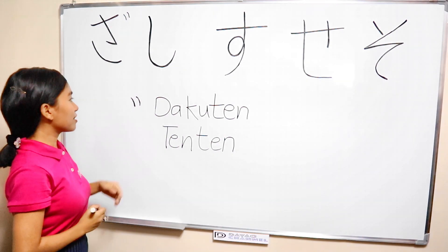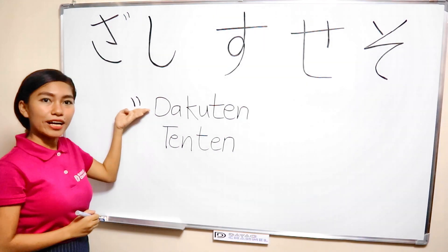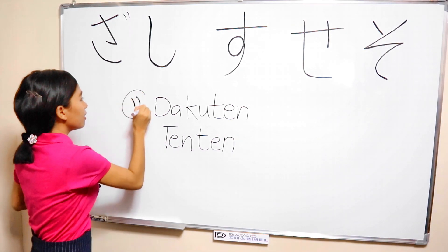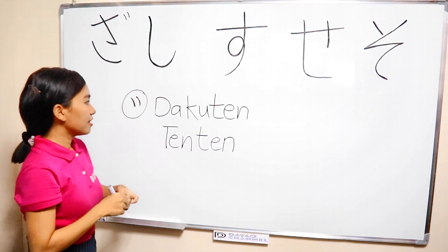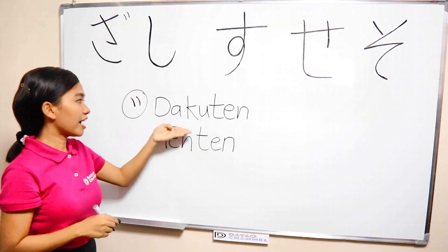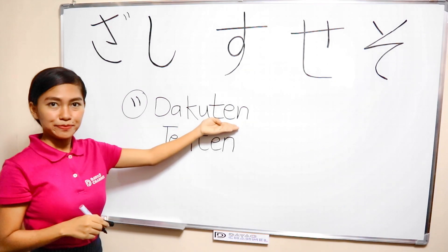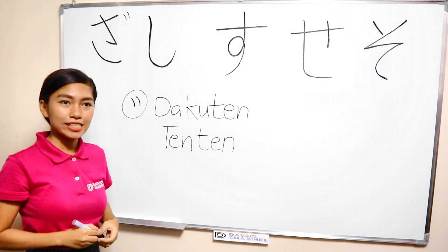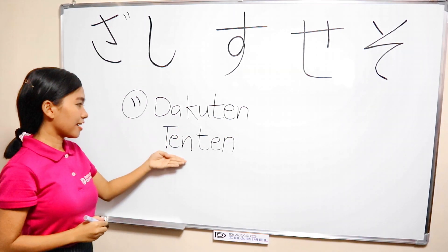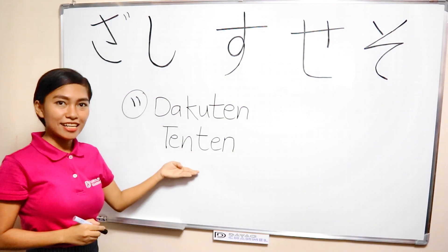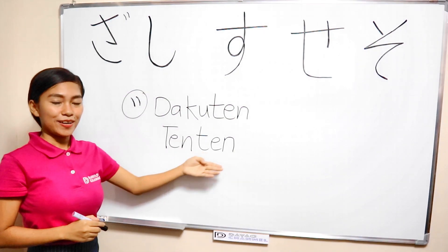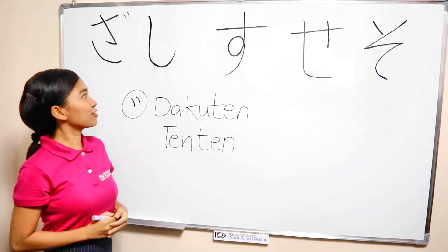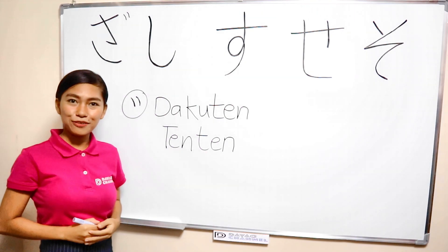These small two lines are actually called dakuten, dakuten. But most Japanese people call it tenten, tenten. Alright, did you get it? Then, now let's proceed to the next alphabet.